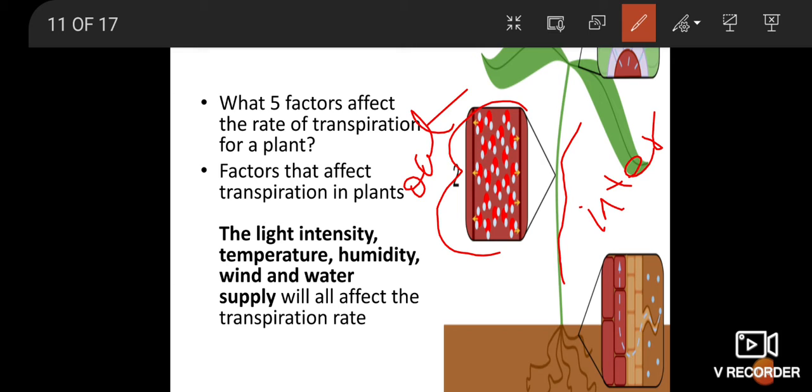Internal factors that affect transpiration include number and distribution of stomata, percentage of open stomata, water status of the plant, canopy structure, and examples of canopy structures. These include leaves size, open stomata, and internal parts like nucleus, vacuole, cell wall, stomata, and chloroplast.